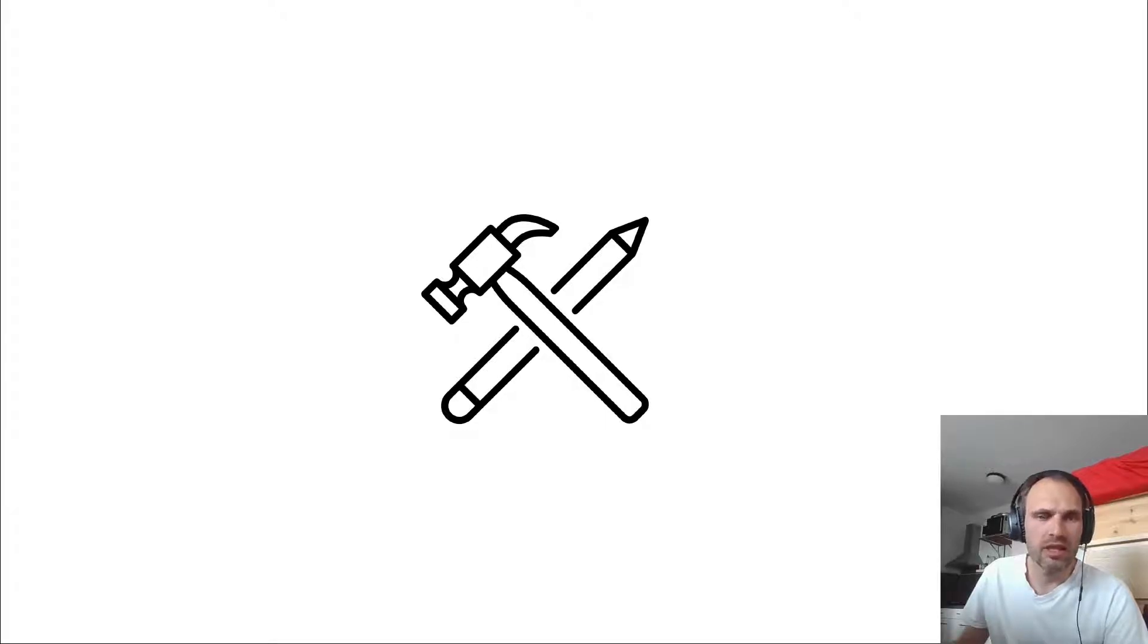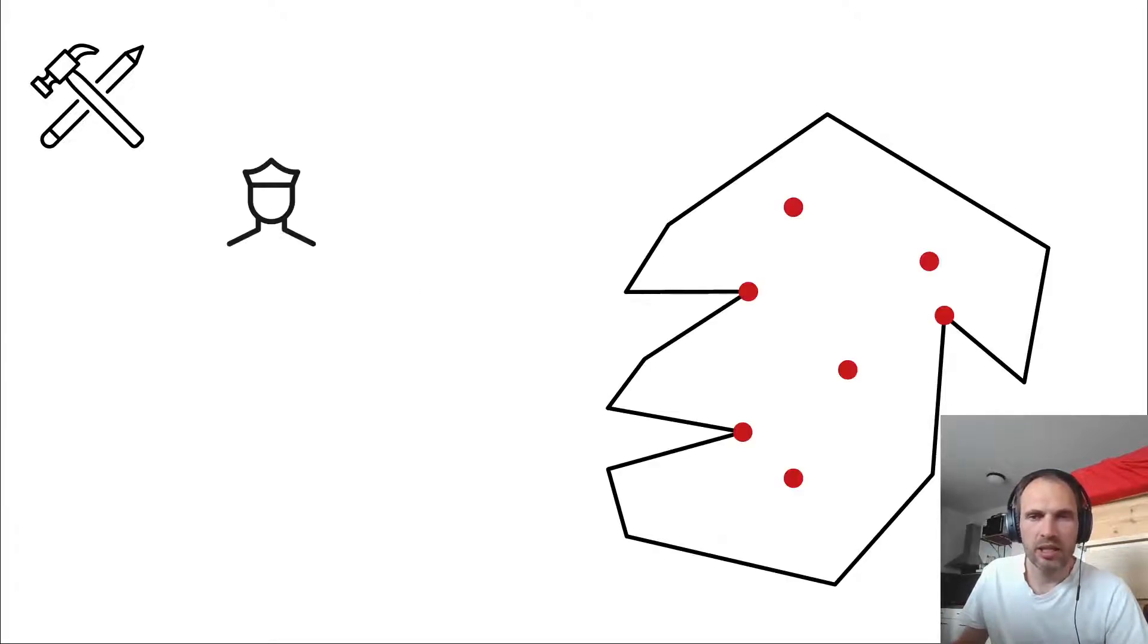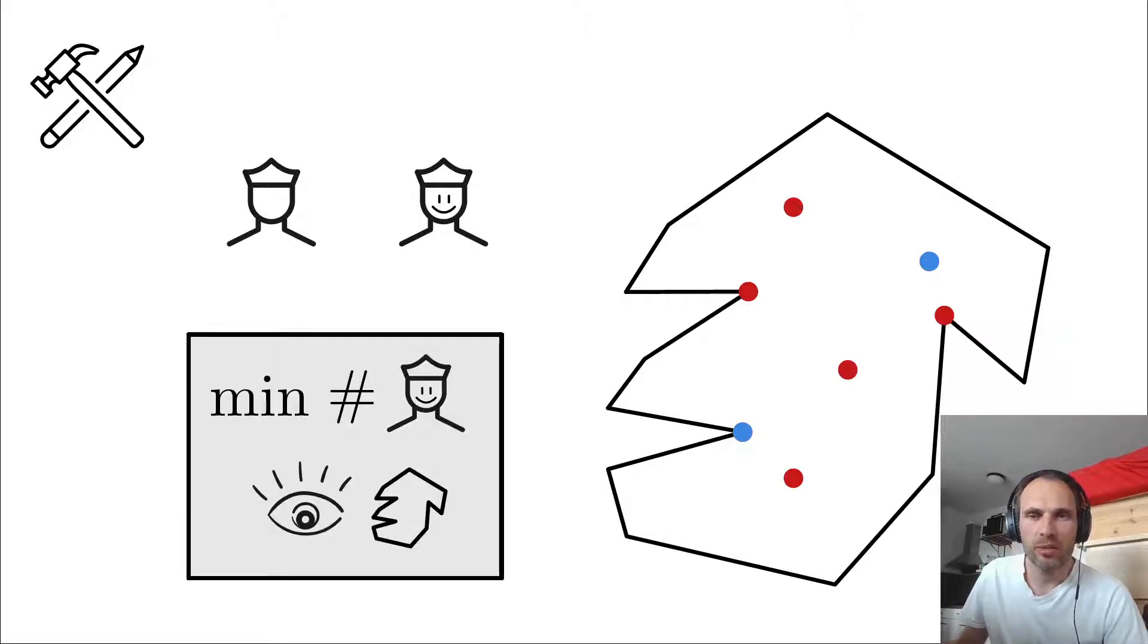They somehow go very different route. They don't use algebraic methods, but if you have a polygon, then they just generate these potential guard positions, we call them candidates. And then in one way or another, among those candidates, they pick the guards that they find optimally.